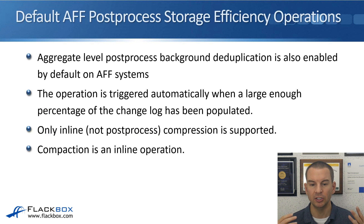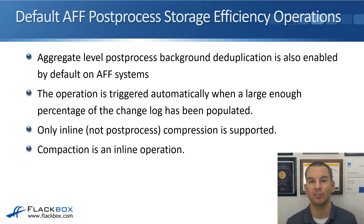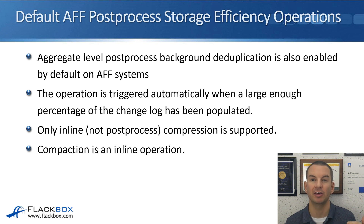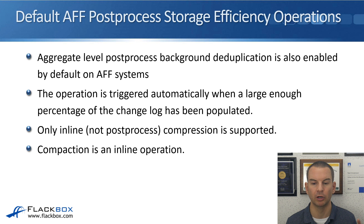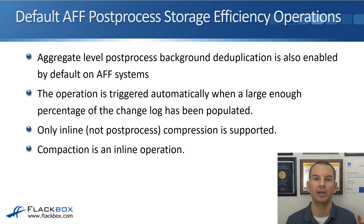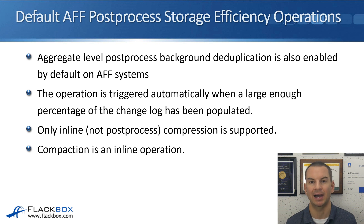Post-process deduplication is also enabled by default on AFF systems. The operation is triggered automatically when a large enough percentage of the change log has been populated — by default, when 20% new data has been written to the volume since the last time background deduplication ran, it will run again. On the AFF, only inline — not post-process — compression is supported, and compaction is an inline operation. So the only post-process operation that happens on the AFF is deduplication, and that happens by default.